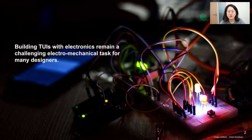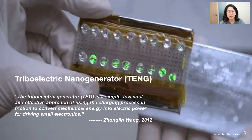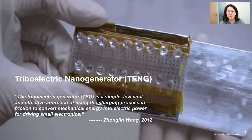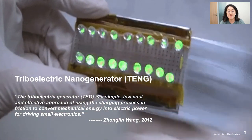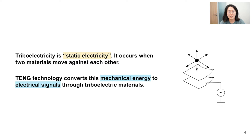Building tangible object interfaces with electronics remains a challenging task for many designers. The Triboelectric Nano Generator (TENG) is a promising approach that gives TOI sensing capability. TENG directly converts static electricity generated by physical material movement into electrical signals, so we can use materials themselves to replace electronic components.